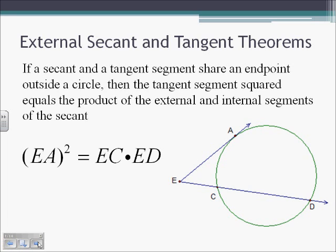We have another theorem, the External Secant and Tangent Theorem. If a secant and a tangent segment share an endpoint outside of a circle, then the tangent segment squared equals the product of the external and whole segments of the secant. So our tangent segment EA squared is going to equal the external part EC times the whole segment ED.